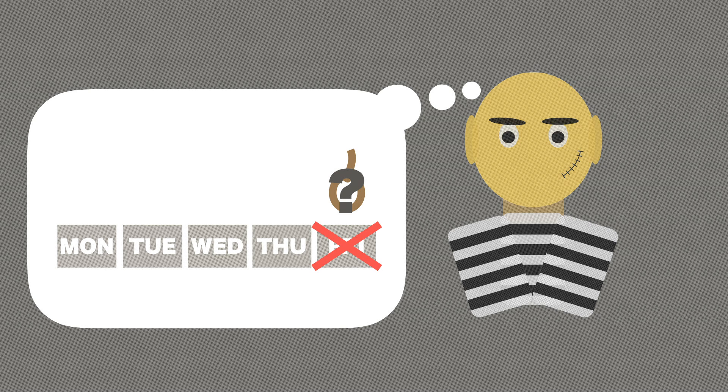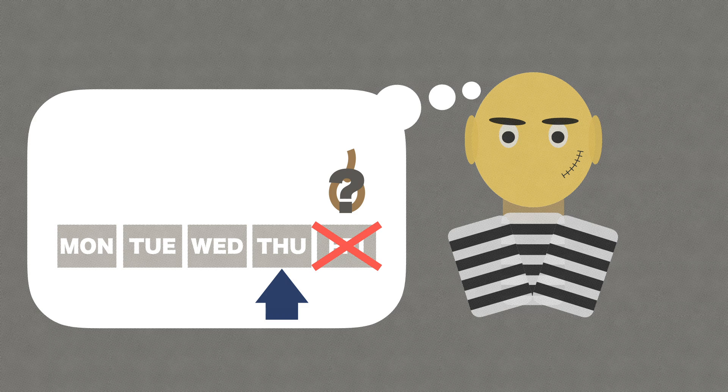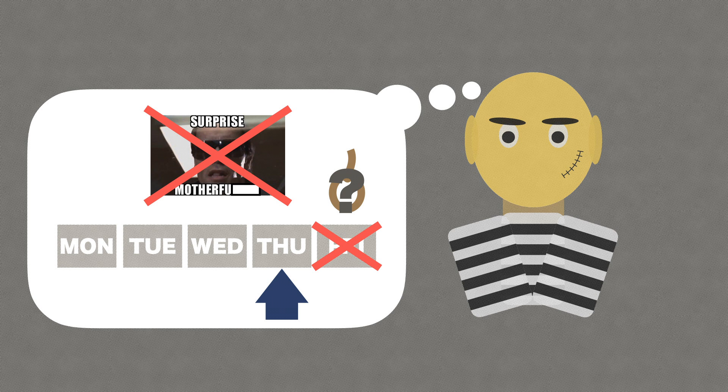The prisoner deducts, they cannot execute me on Friday. Why? If I am still alive after Thursday noon, then I would know that they will come for me the next day. I won't be surprised when they knock at my door.